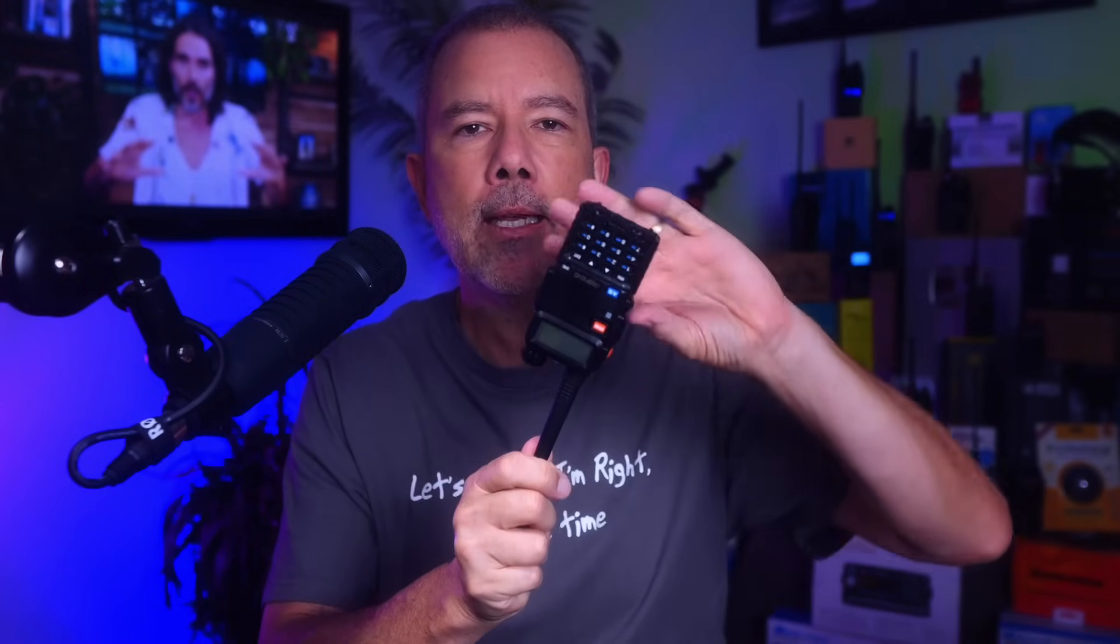As you are probably already aware, the Baofeng UV5R is the world's best engineered and most popular walkie-talkie radio. But sadly, a lot of people take it for granted. Not only can you use this radio to talk with strangers or friends, but you can also use it as a scanner - a very slow scanner when compared to a real scanner, but a scanner nonetheless.